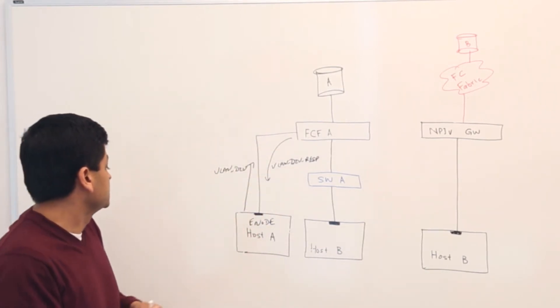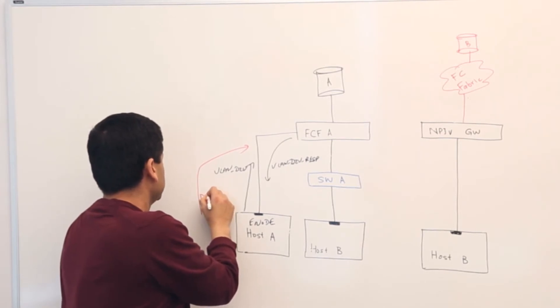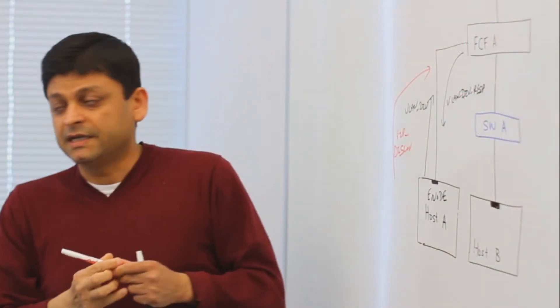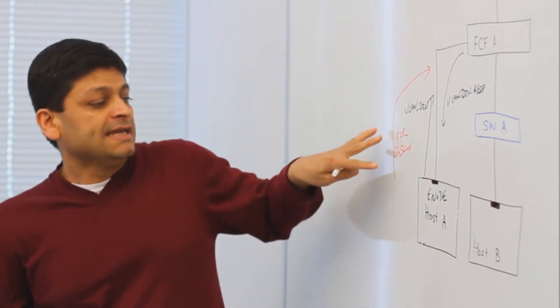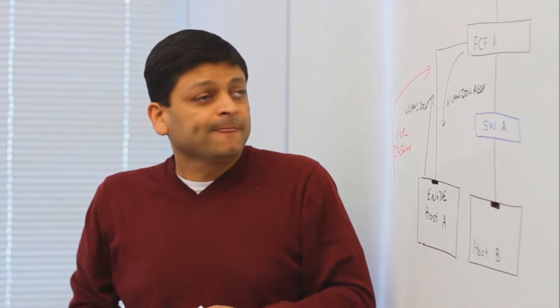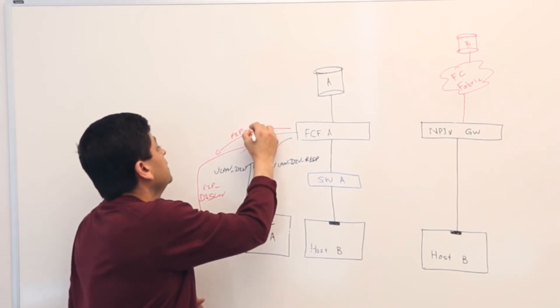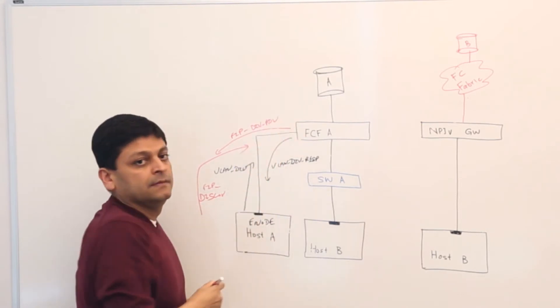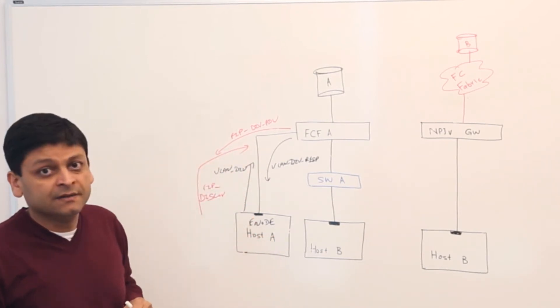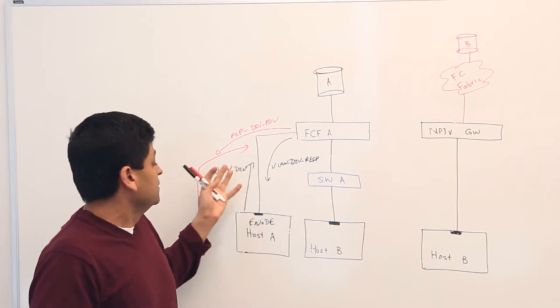The second set of frames that the enode sends is what we call discovery frames. So FIP discovery frames. Again this is a multicast, Ethernet multicast frame that this enode will send. When this FCF receives that frame, he will respond with what we call FIP discovery advertisement. And this FIP discovery advertisement is actually a unicast frame addressed to this host saying that hey I'm here. Same thing will happen here except that we have this middle switch right here. But the protocol is the same.